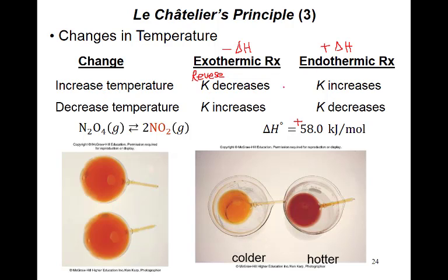For an exothermic reaction, if the temperature decreases, the system is liberating heat and the outside temperature is low, so the system is happy and goes forward. For an endothermic reaction, if the temperature decreases, the outside temperature is low and the system also needs heat — both are lacking heat — so the system is not happy and the reaction goes in the reverse direction.